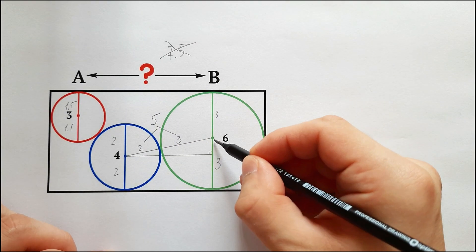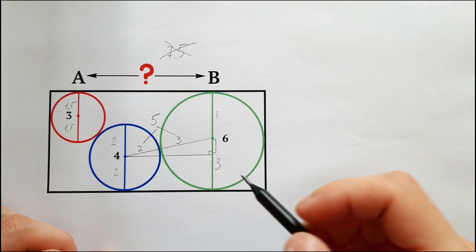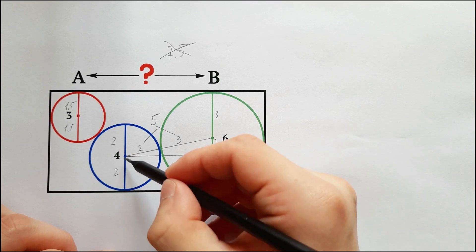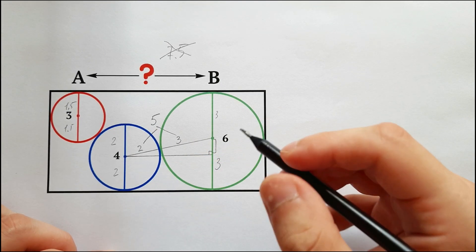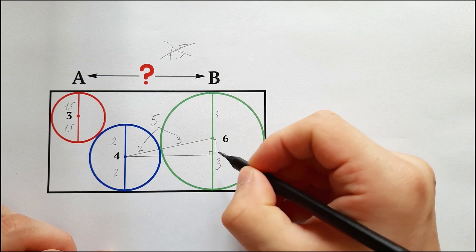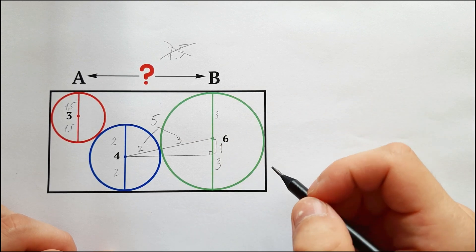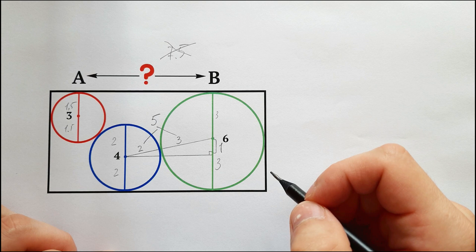This side is also easy to find because this part is equal to the radius of the blue circle, which is 2, and the radius of the green circle is 3. So 3 minus 2 gives us 1.